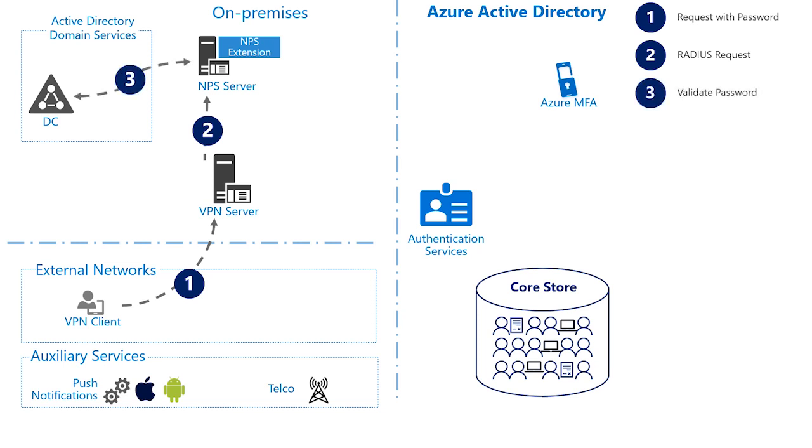The NPS server now uses the credentials in that request to validate the password against Active Directory. And if that is successful, it will then invoke MFA for the user. It would seem there are two steps to the authentication process for the user — the primary authentication using NPS is against the on-premises Active Directory, and then once authenticated, the secondary step is to invoke the MFA challenge using the Azure MFA service before returning the response to the VPN server.